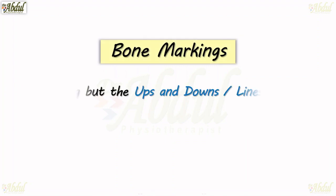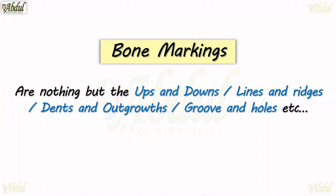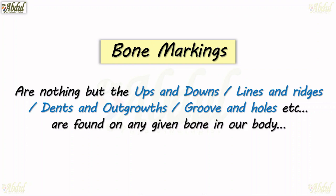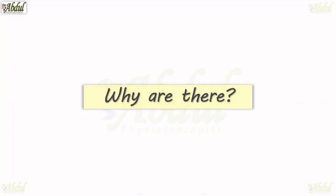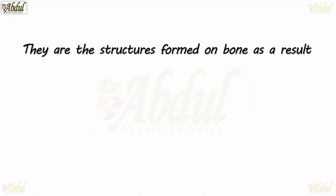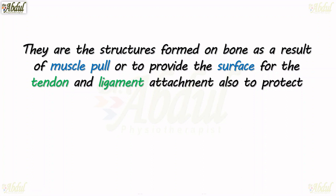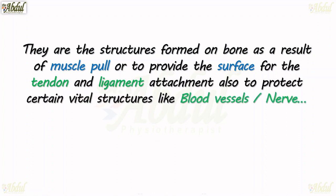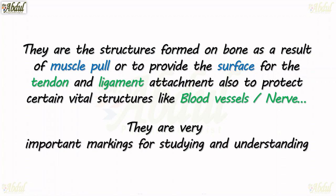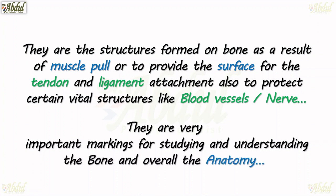Bone markings — very important. These are nothing but the ups and downs, lines and ridges, dents and outgrowths, grooves and holes, etc., found on any given bone in our body. They are the structures formed on a bone as a result of muscle pull or to provide surface for tendon and ligament attachment, and also to protect certain vital structures like blood vessels and nerves. They are very important markings for studying and understanding the bone and overall anatomy.